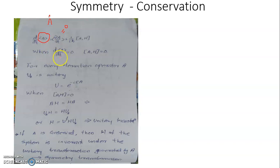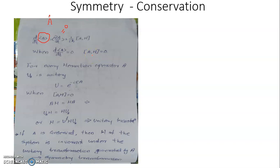When d<A>/dt = 0, we have [A, H] = 0, meaning the operator corresponding to the observable commutes with H. Corresponding to every Hermitian operator, whenever an observable is a constant of motion, the operator corresponding to that observable will commute with H. Conversely, when an operator commutes with H, the dynamical variable associated with that operator will be a constant of motion. This is the fundamental requirement for a quantity to be conserved: its operator must commute with H.